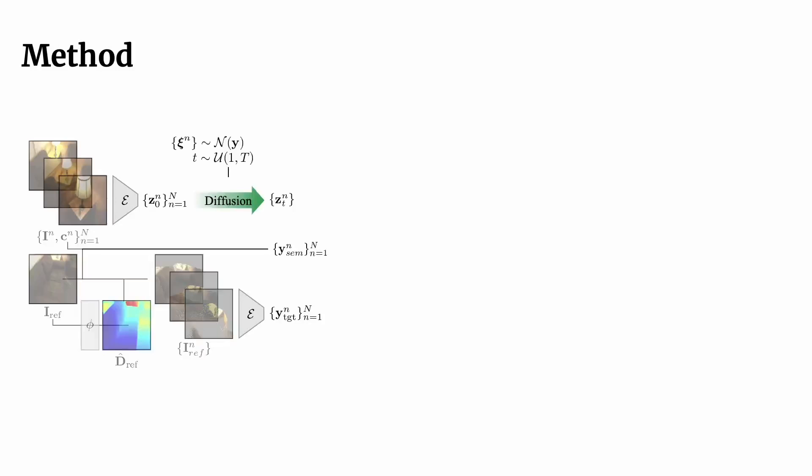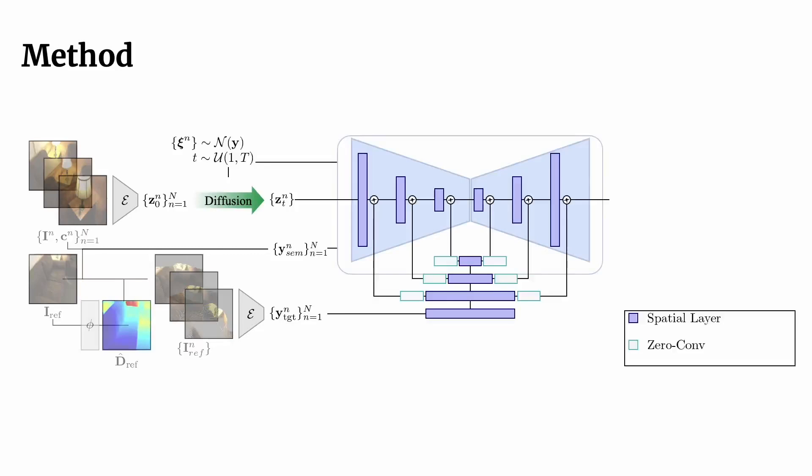To better condition on the target trajectory, we encode the warped reference images and use zero convolutions to inform the encoder and decoder stage of our UNET model. For consistent generation even in areas with no overlap with the reference view, we introduce correspondence attention layers that use cross-attention to couple the generation across frames.